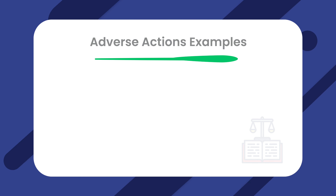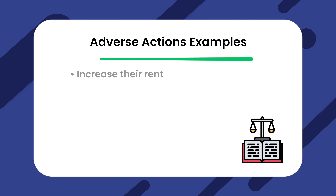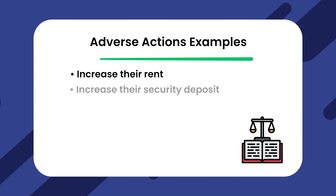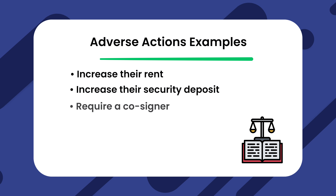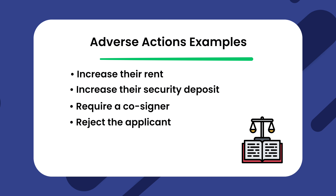Finally, I want to tell you about adverse action notices. You need to share these anytime you find information during the tenant screening process that makes you want to take one of the following actions: increasing their rent, increasing their security deposit, requiring a cosigner, or rejecting the applicant altogether.